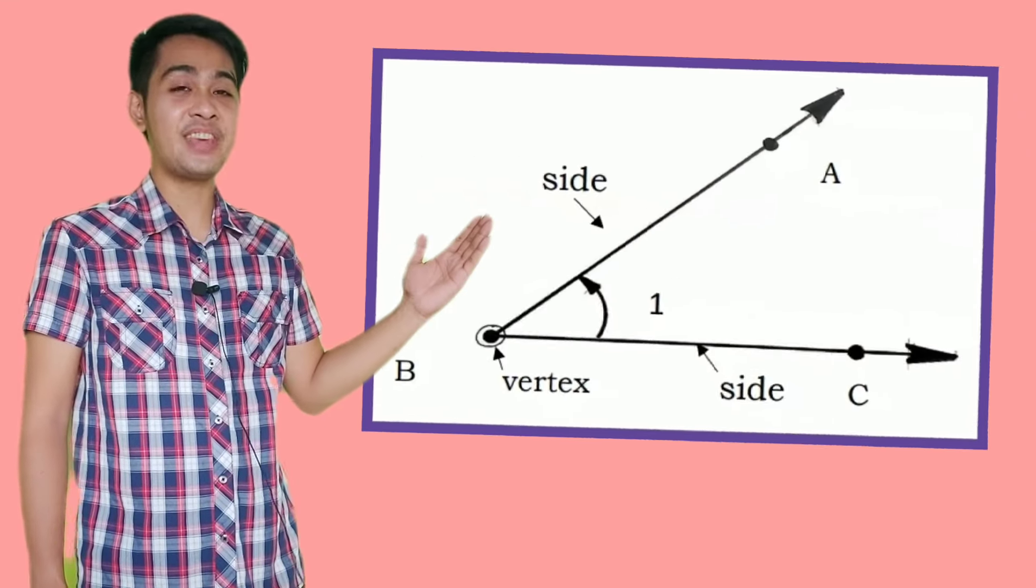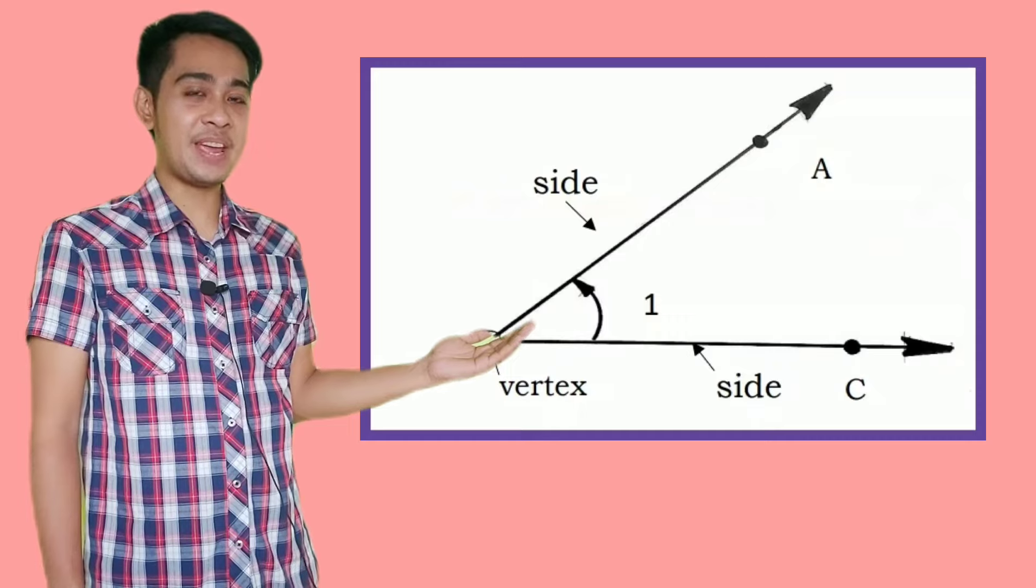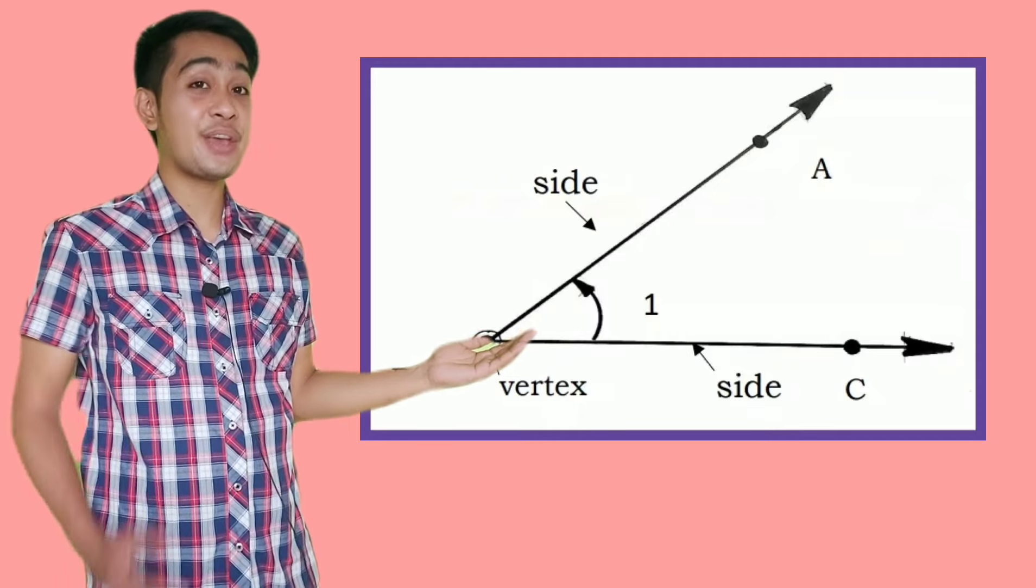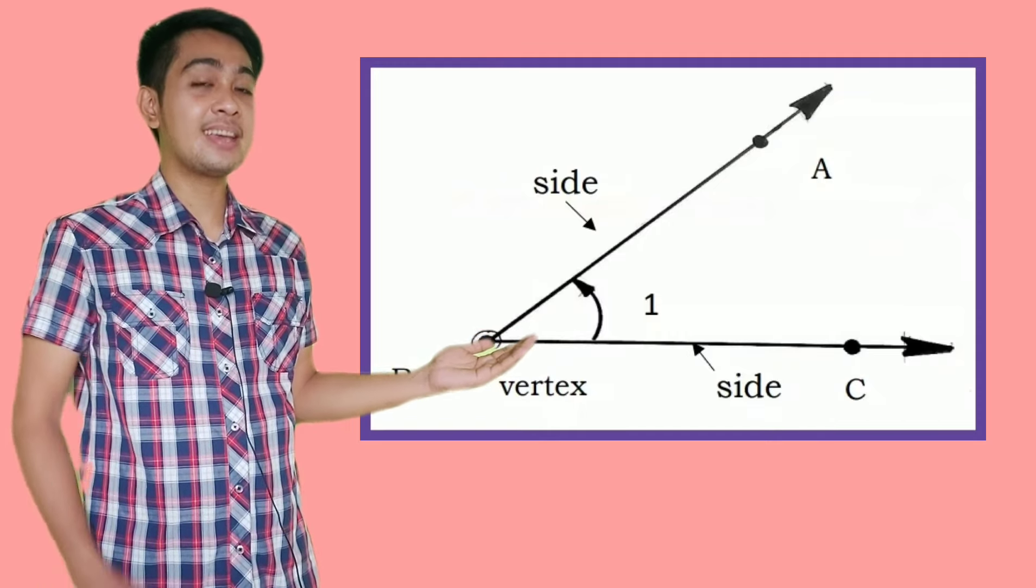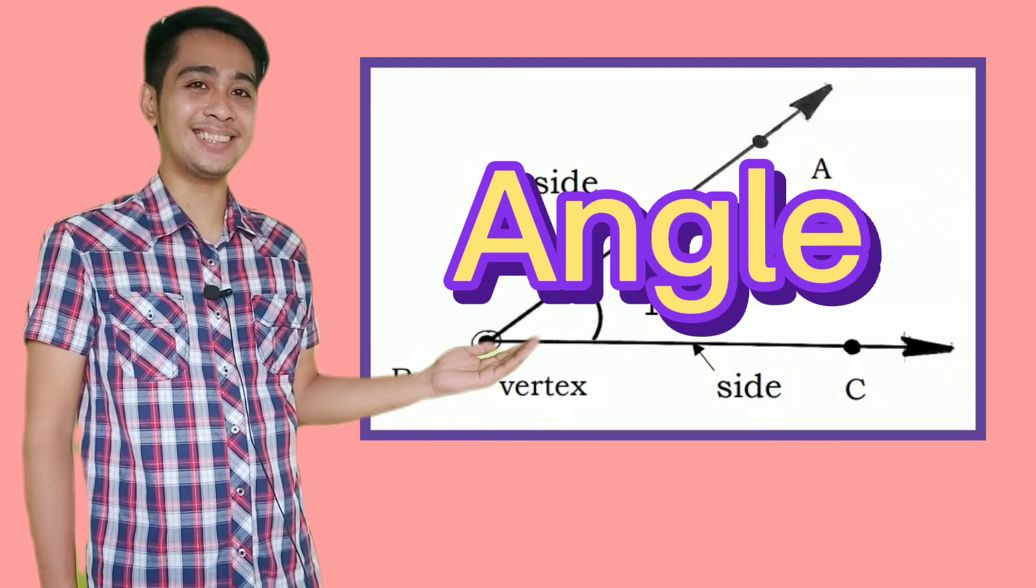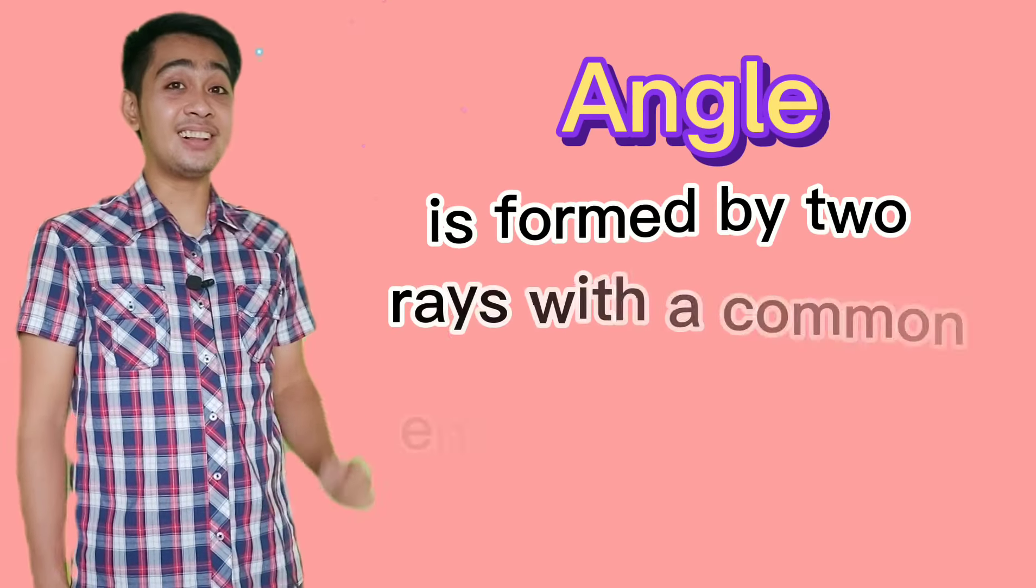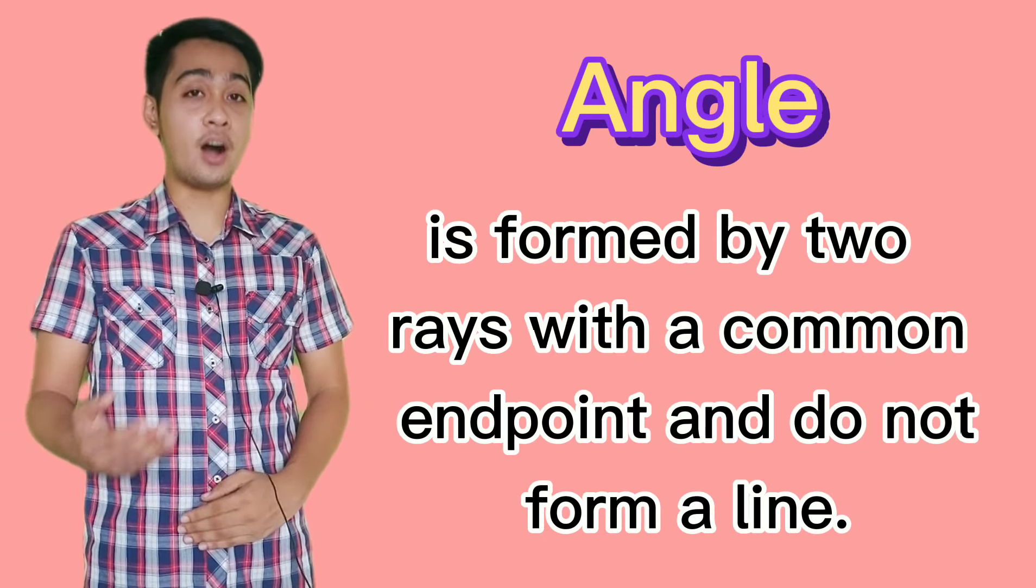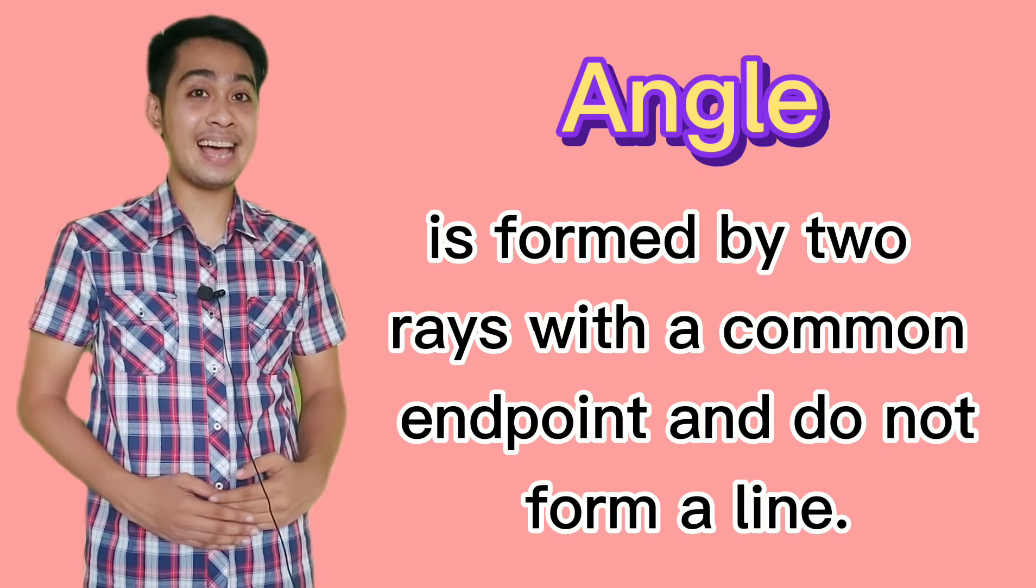Let's have this figure. Look at Ray BA and Ray BC. They have the same endpoint. The figure formed is called an angle. An angle is formed by two rays with a common endpoint and do not form a line.